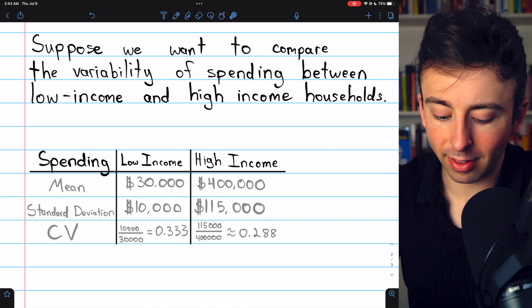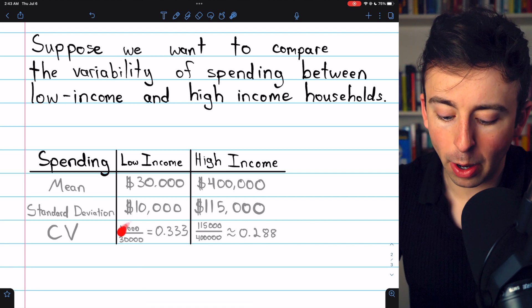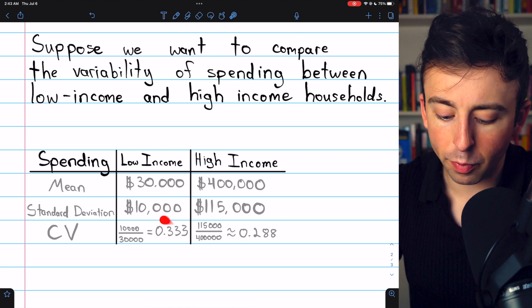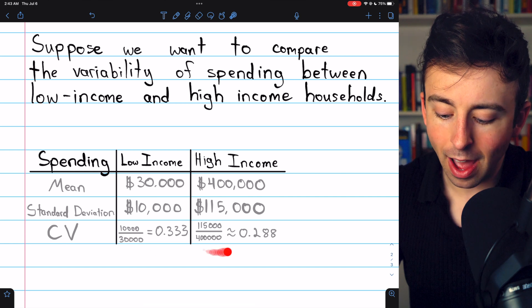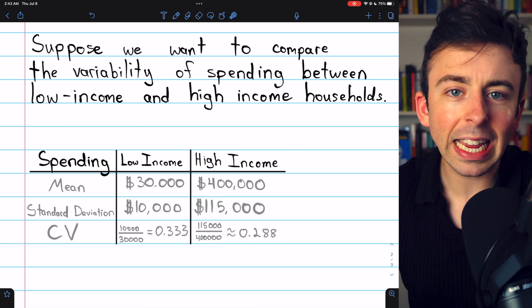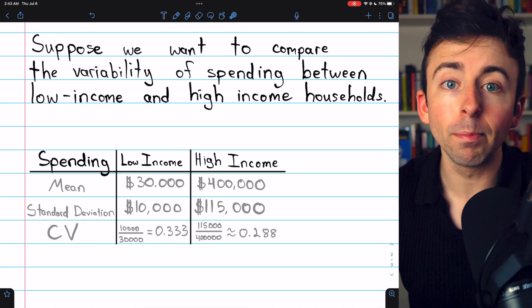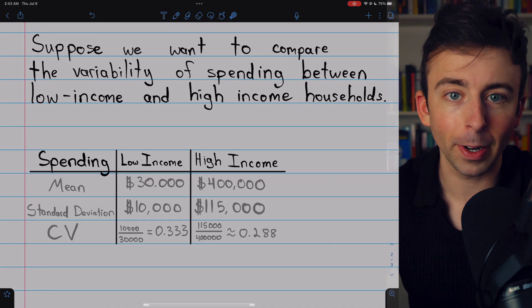Once again, this is a made-up example, but in this example, we see that the low-income households really have a greater variability in spending than the high-income households, once we take into account the different means by using the coefficient of variation.